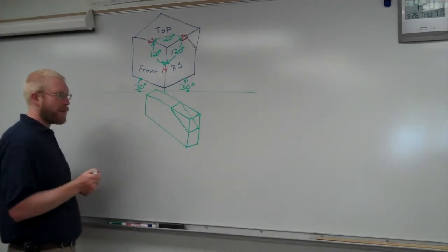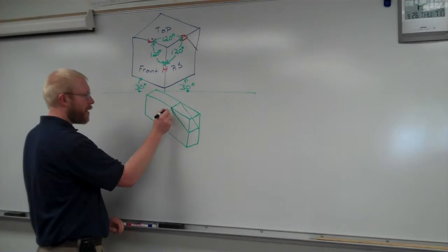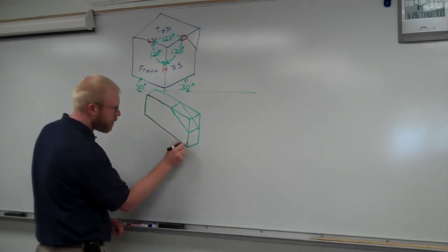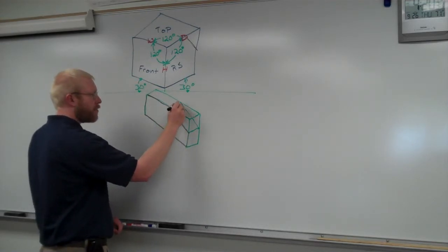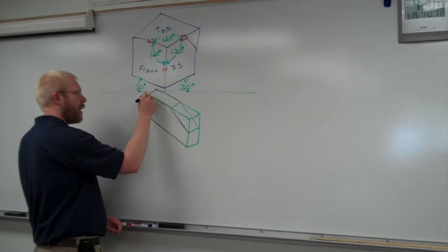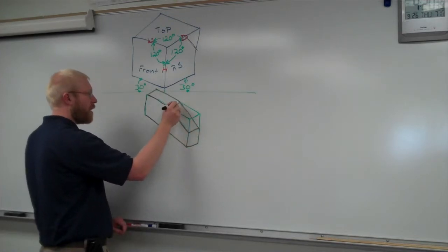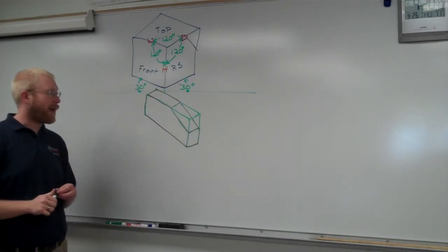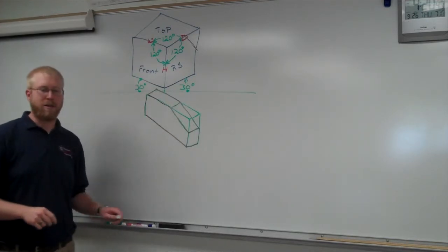Once I was done with my construction, I could go back and darken in my entire object. This is a very simple object. If I have a more complex object, as I create different views, I like to box in the different surfaces and darken in different lines that I have. My black lines would represent my darkening in. Right there would be that completed object. This line would not be a true measurement if I actually built the object.